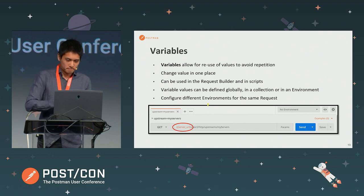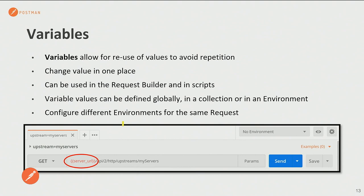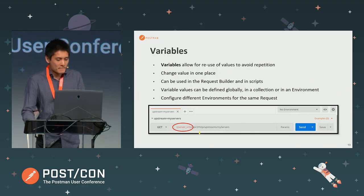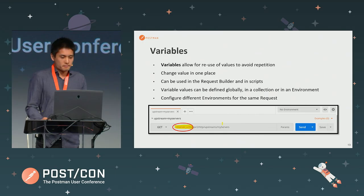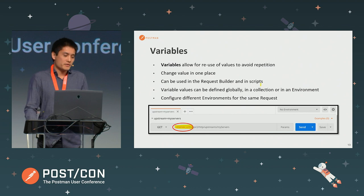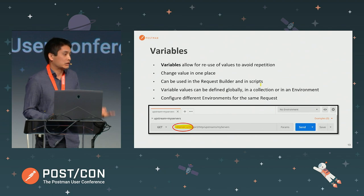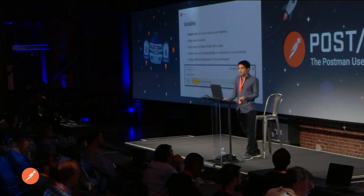The next concept is variables. Most people from a programming background know how variables are used, and Postman is no different. We use variables to allow us to reuse values and avoid repetition. So you can change the value of a variable in one place. Instead of specifying the actual domain in a URL, you can put a variable like 'serverURL' there. The value of that variable can then be determined based on what you configure, and you can use variables in your request builder and in scripts. These values can be defined globally, in a collection, or in an environment.